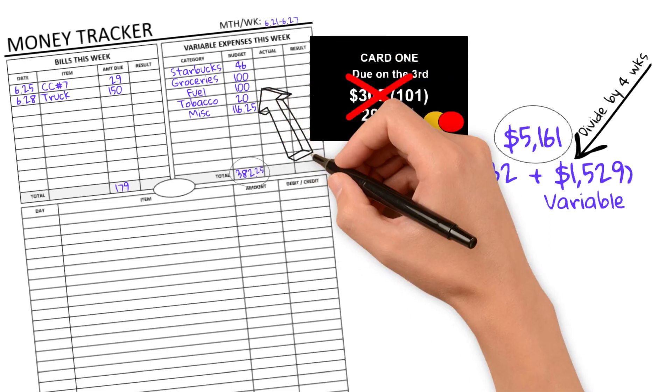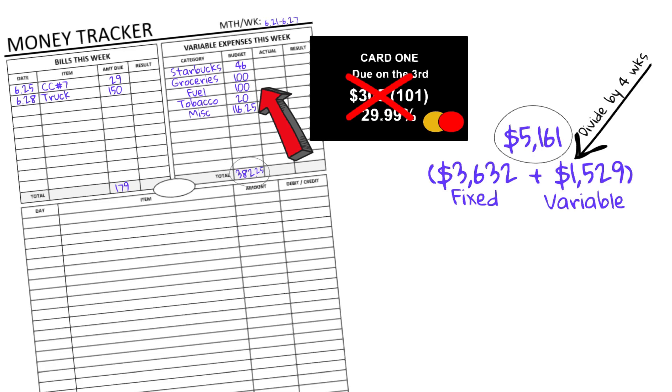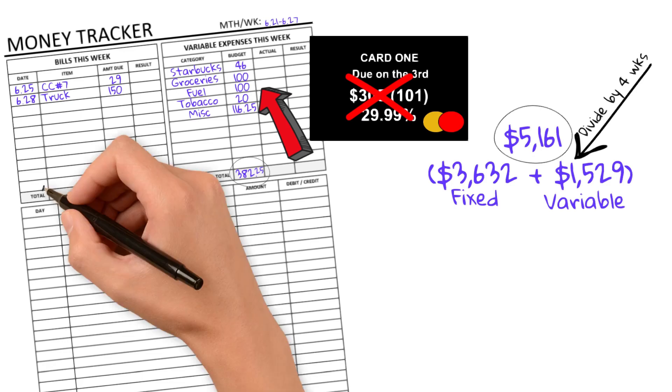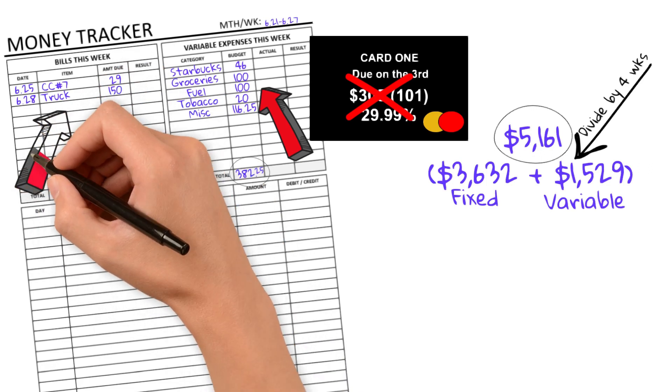So on the right side of my money tracker, I have my budget numbers for the variables of my daily spending. On the left, and that includes my husband's spending as well. He doesn't spend as much as I do. So it's really me. So on the left, I have bills due.